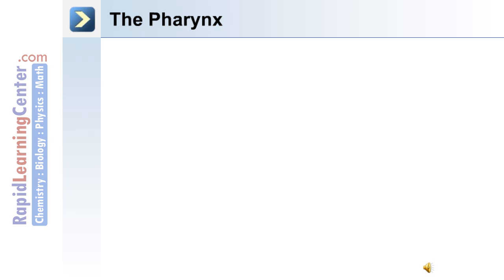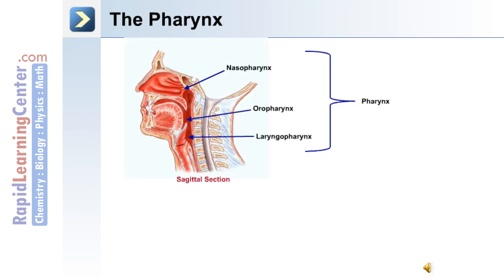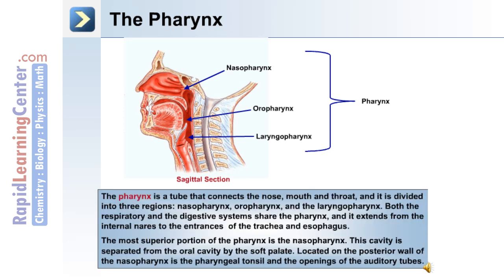A large structure in the upper respiratory system is the pharynx. The pharynx has three major sections: the nasal pharynx, the oral pharynx, and the laryngopharynx. The pharynx is a tube that connects the nose, mouth, and throat, and it's divided into these three regions.